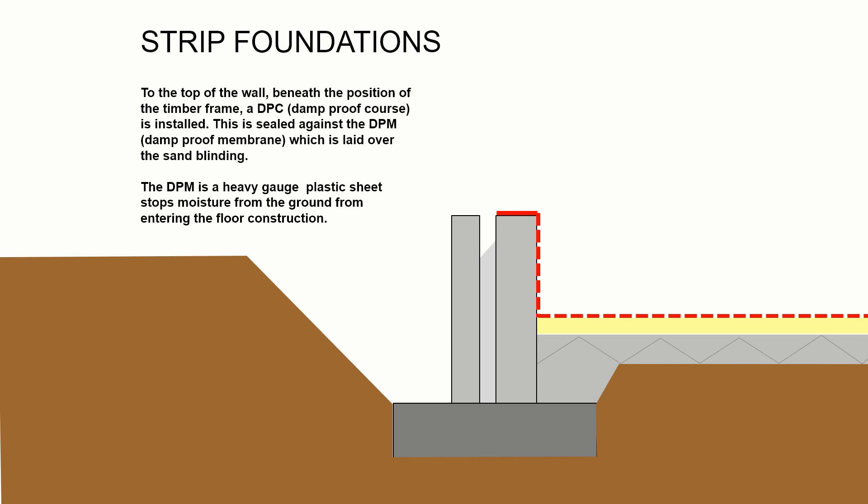We would have a damp proof membrane running across the floor, and also a damp proof course coursed horizontally into the wall. Normally these two elements are sealed against each other to create a continuous layer of waterproof material underneath the timber frame, the block work, and the floor slab and insulation — so there's no possibility of moisture entering from the ground.